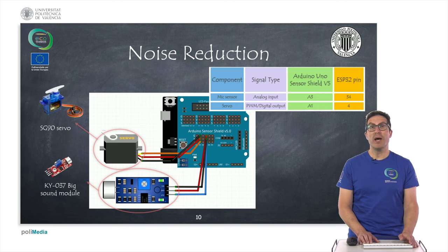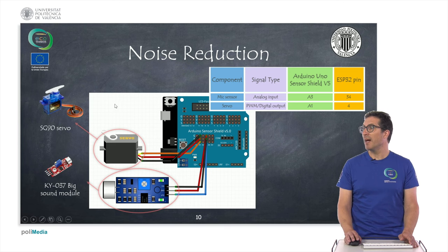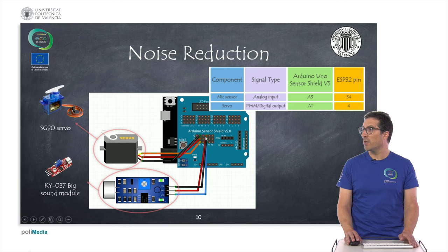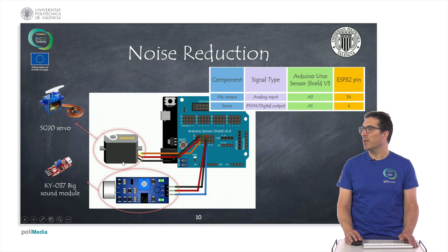Here we have the connection diagram for the noise reduction elements. This is a Fritzing circuit in which we have the Arduino sensor board with ground and power pins. The servo is connected to ground and power, and the mic is also connected to ground and power. Note there's a color mistake in the diagram — the power should be red and ground should be black. The mic's analog signal is connected to A3, and the servo is connected to A1.